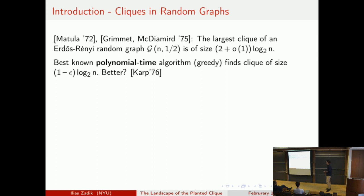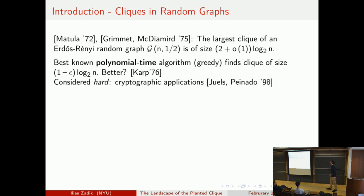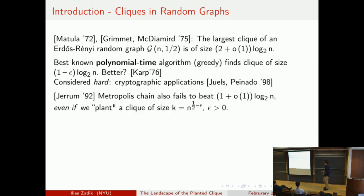People have asked whether you can beat this greedy result. To this day, we cannot find even a (1 + ε) log n clique in polynomial time. It's one of the most embarrassing situations — the most naive algorithm is the best known. After about 20 years from Karp's 1976 paper, people started believing this is actually a hard problem. Cryptographic primitives have even been based on the hardness of finding a (1 + ε) log n clique.